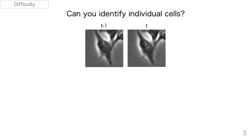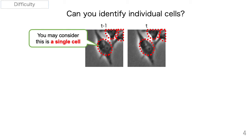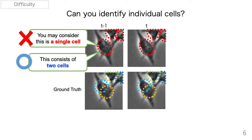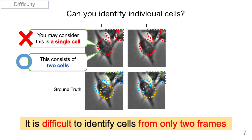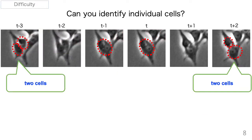This is an example of two cells in close contact at frame t-1 and frame t. You might think of the central cell as a single cell, but it is not single — it consists of two cells, as shown in the ground truth. It is difficult to correctly identify cells with only two frames, even for humans. In this situation, humans observe multiple frames to identify cells. For example, we can easily detect two cells at frame t-3 and t+2.